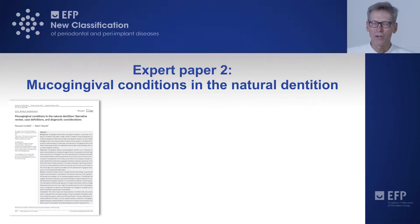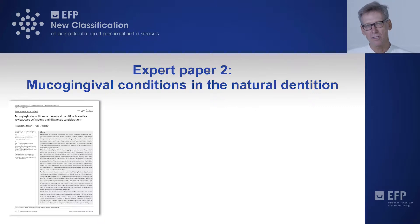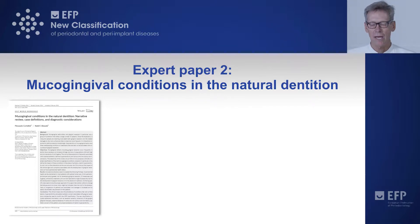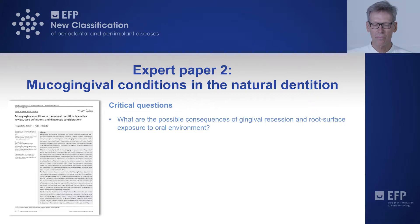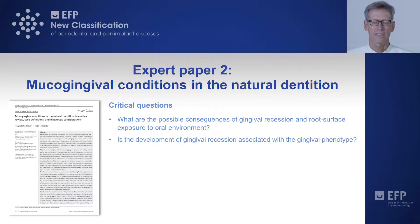Now we come to topic number two: mucogingival conditions in the natural dentition. This is based on an expert paper written by Sandro Cortellini and Nabil Bissada. A few critical questions were phrased and we came up with answers. For example, what are the possible consequences of gingival recession and root surface exposure to the oral environment?